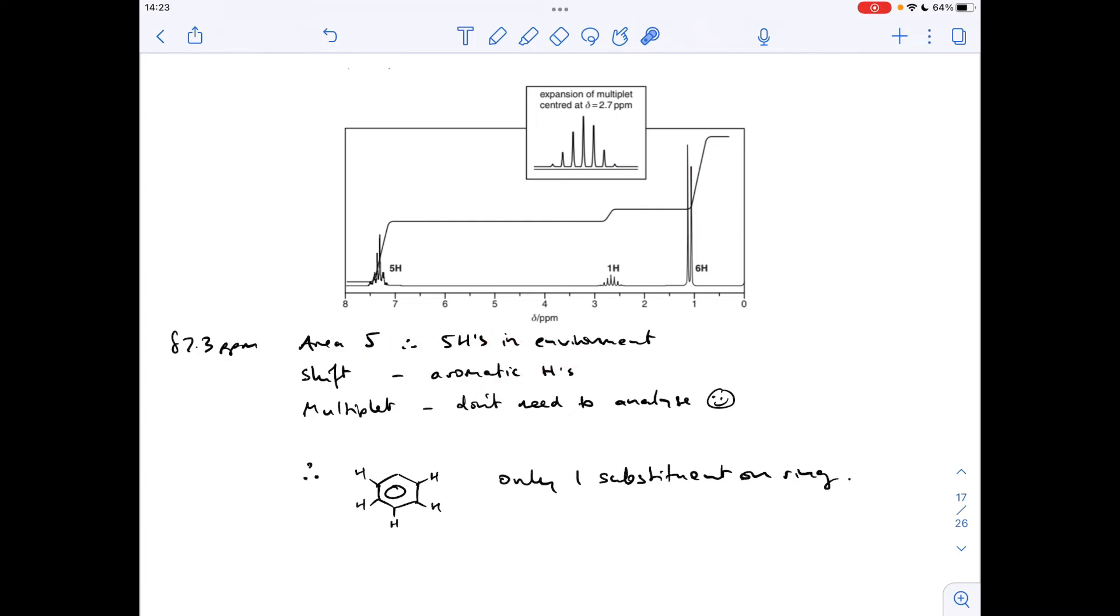So there it all is written up, just very briefly. You don't have to write a massive amount here. So area 5, there's 5 hydrogens in the environment, the shift value indicates aromatic hydrogens. Remember we said it can't be OHs because there's 5 of them, obviously there's only 1 H in an OH.